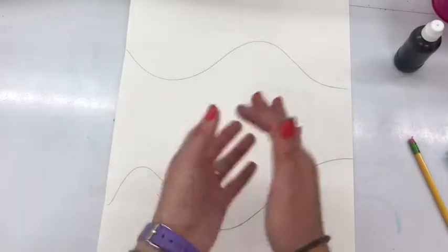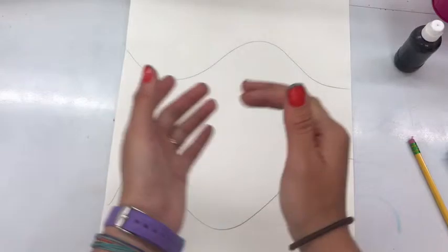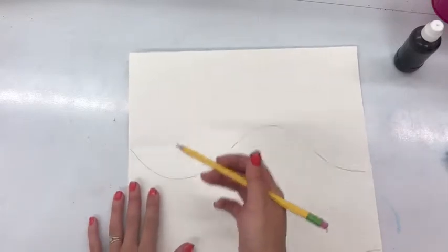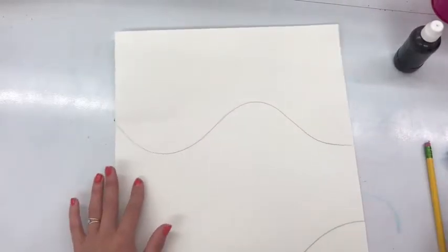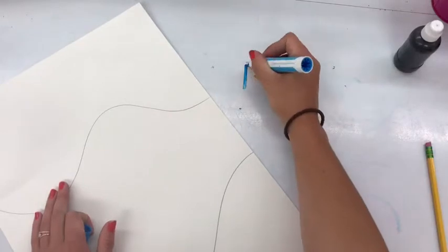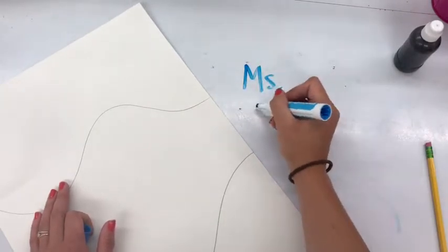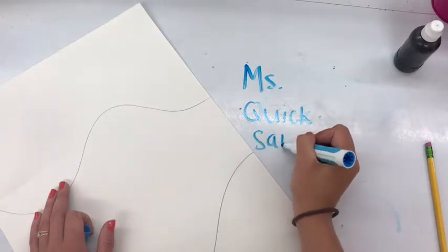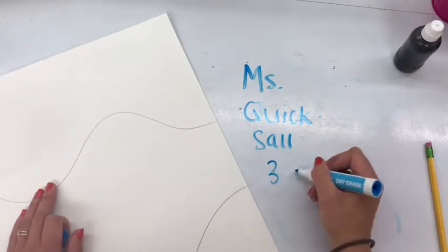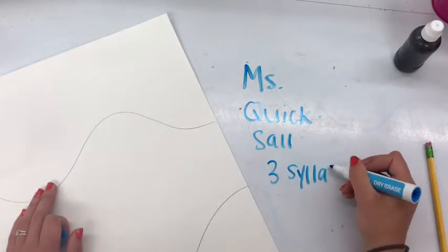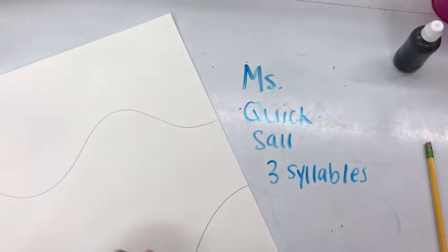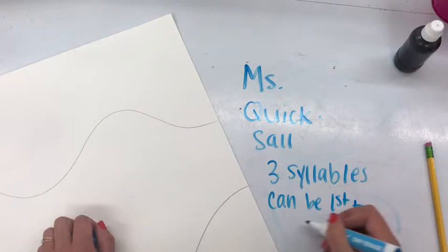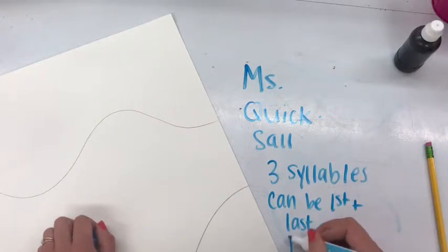I'm breaking up the space into thirds — three equal parts. That wavy line is random though; I don't need to worry about it being perfect. As long as it's near that line near the top and bottom, you're good to go. Now we're going to be stretching our names out, meaning you're going to break your name down into syllables. If you need to clap it out like you do in music class, that would be a great idea. For me that's Miss-Quick-Saul. If your name only has one syllable in your first name, you can also include your last name.